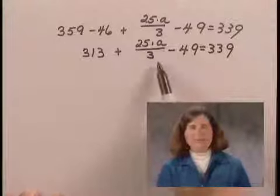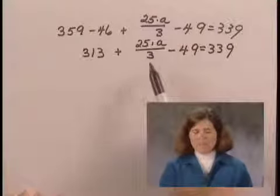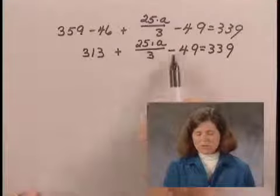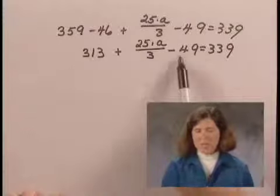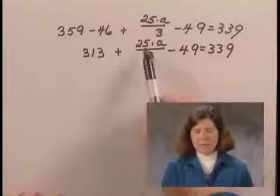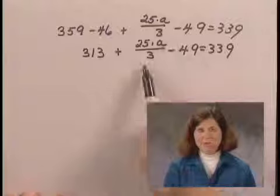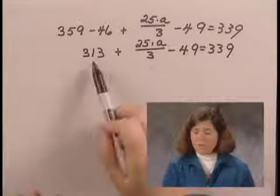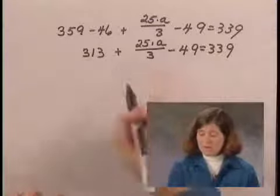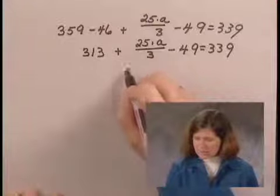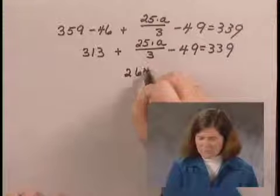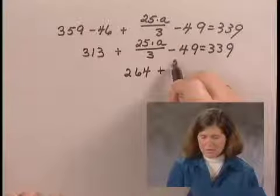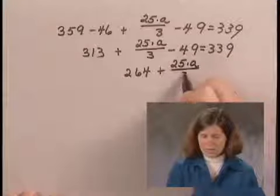Now, since this expression has a variable, and since I can, I'm going to do the subtraction 313 minus 49 and keep this as an addition problem, which I can't simplify any farther. 313 minus 49 is 264, and I still have the expression with my variable in it.